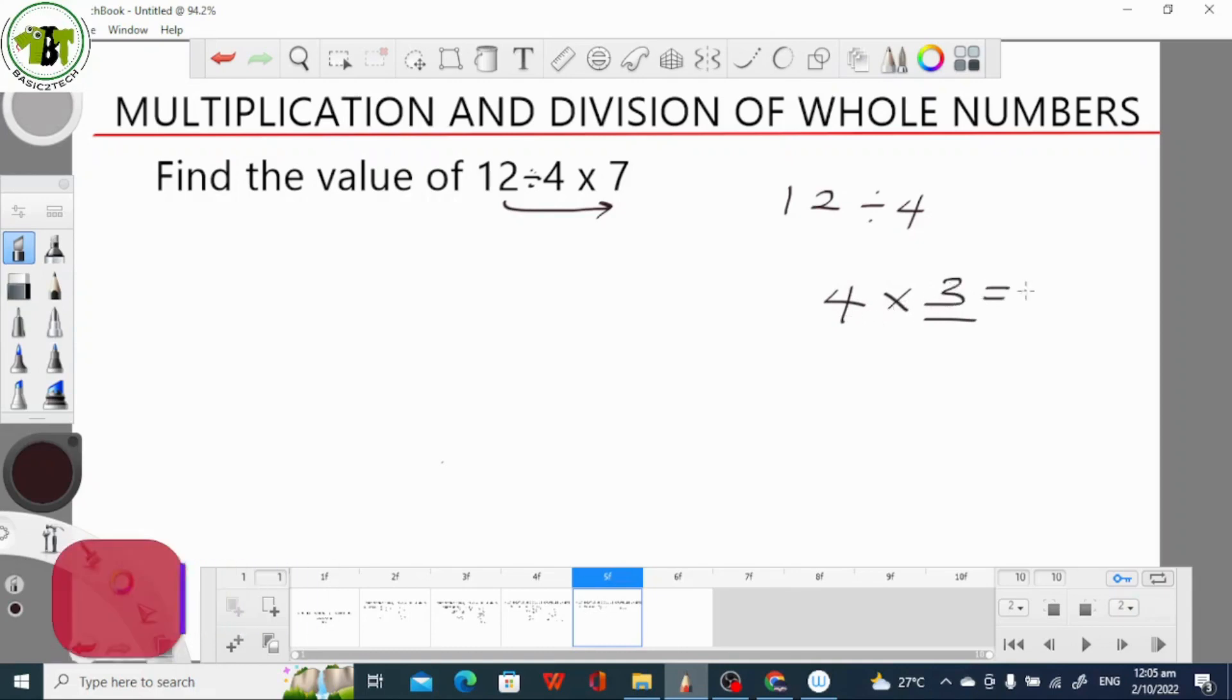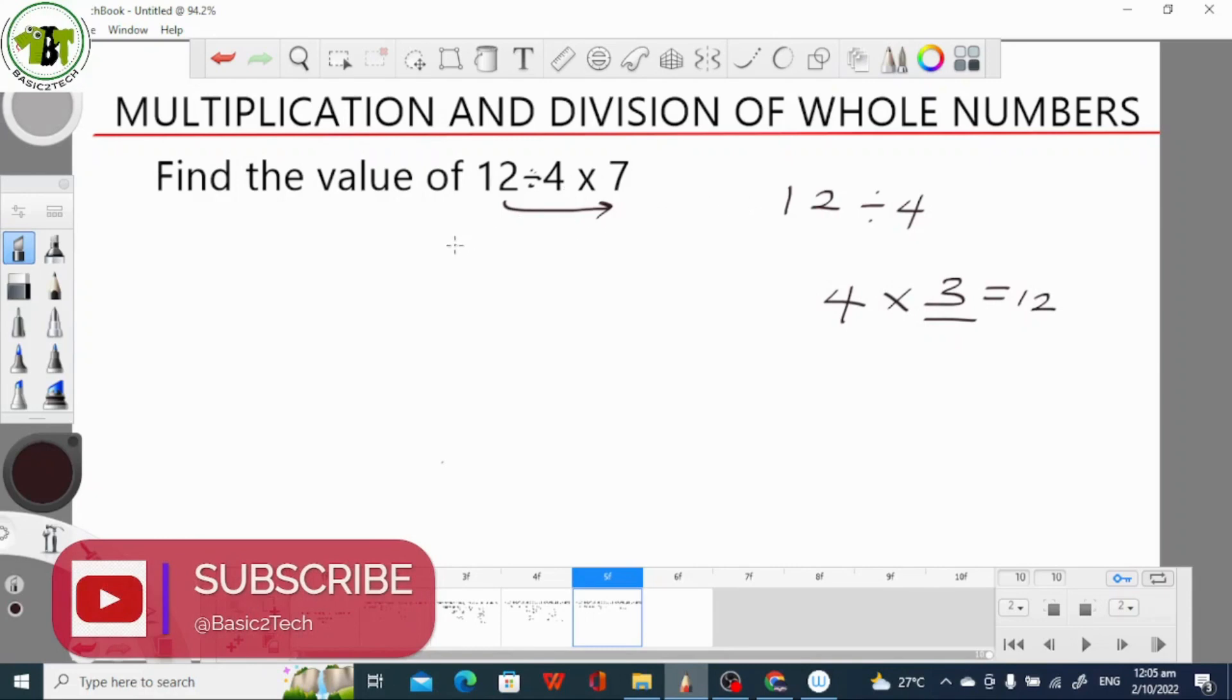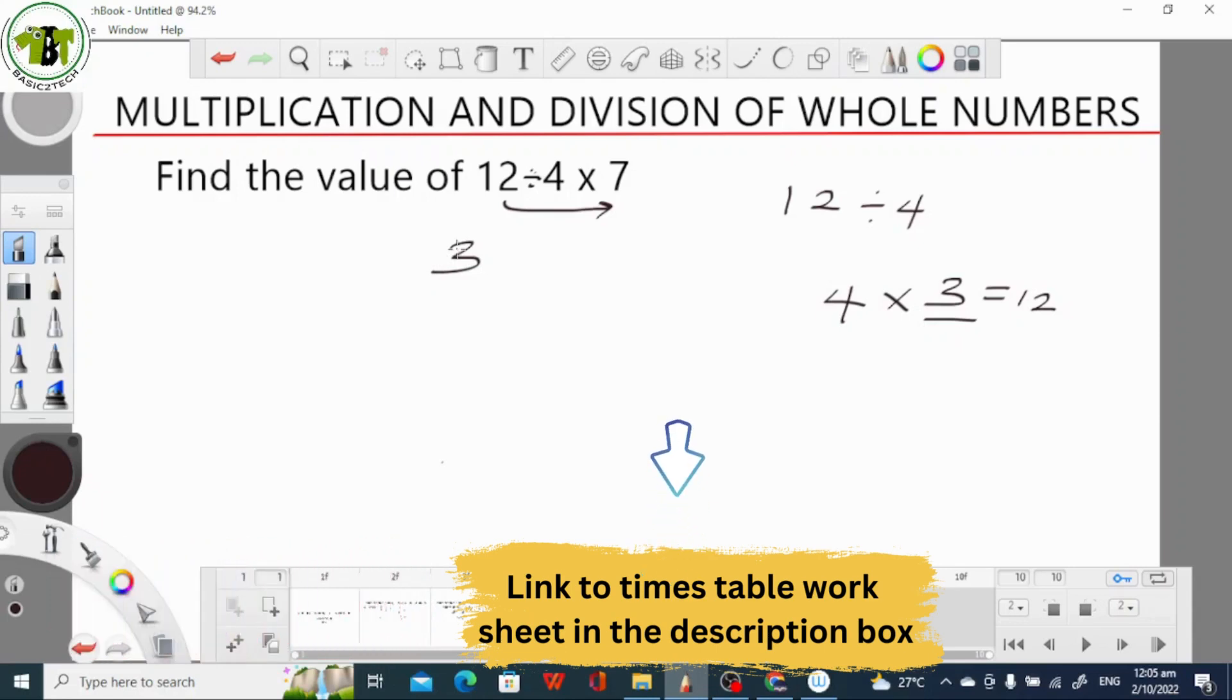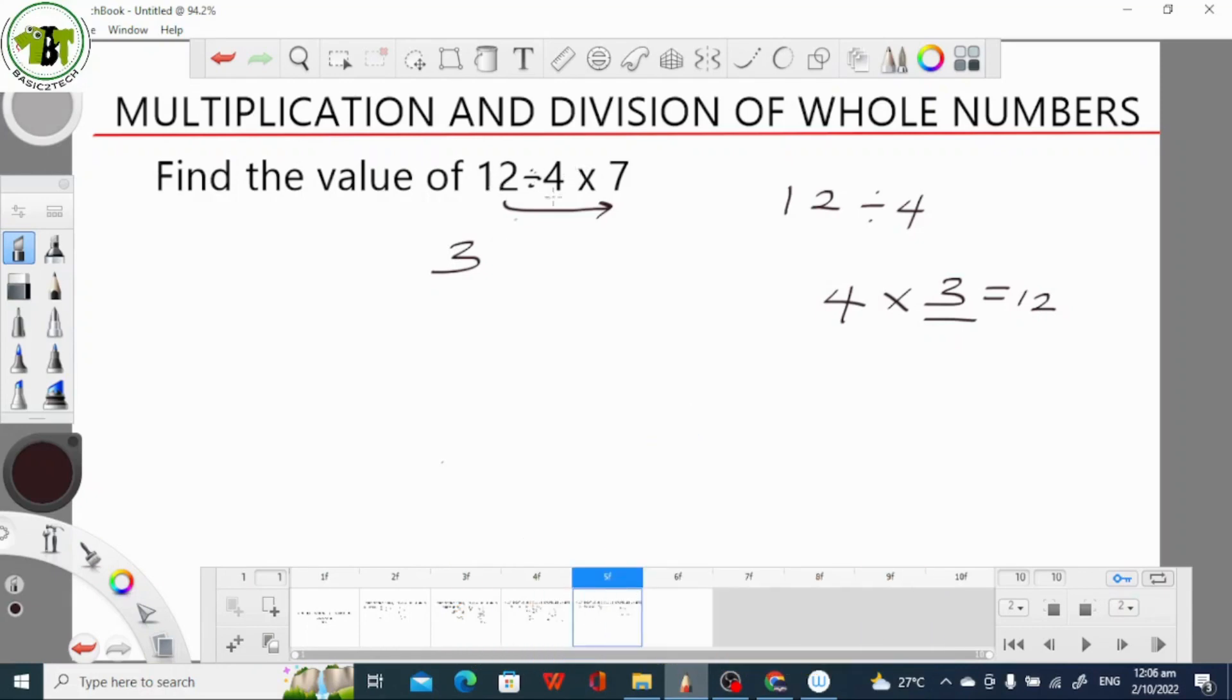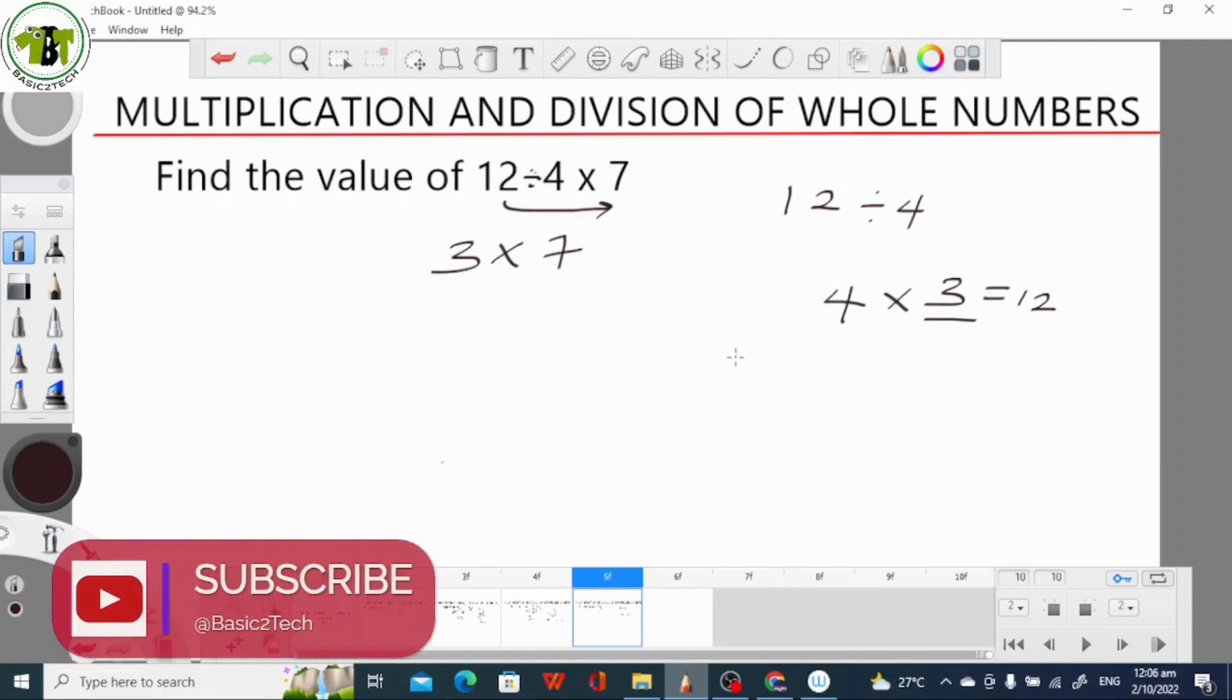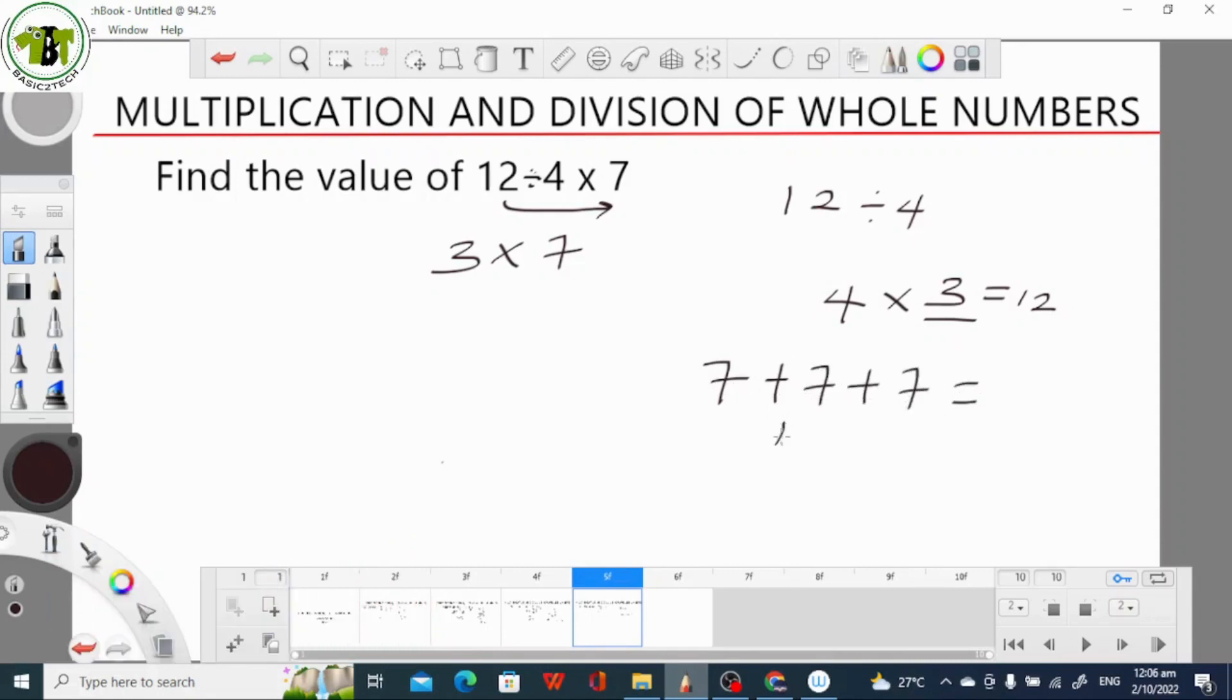3 times 4 is 12. So therefore, 12 divided by 4 is 3. For you to understand multiplication and division, you have to understand your times table. It's very important if you want to be able to easily get the answers for division and multiplication. So 12 divided by 4 is 3 times 7. 3 times 7 means that we are asked to find the sum of 3 in 7 places, or we can find the sum of 7 in 3 places. That means 7 plus 7 plus 7. 7 plus 7 is 14, 14 plus 7 is 21. So that means that 3 times 7 gives us 21.